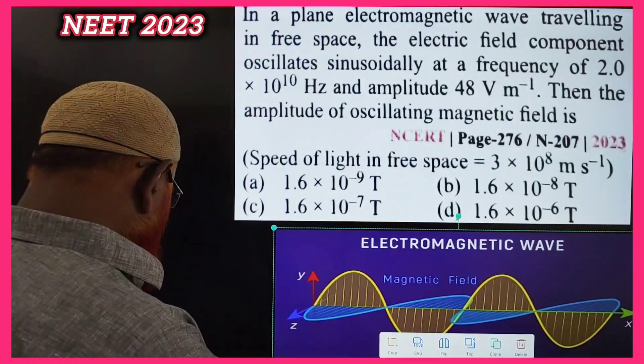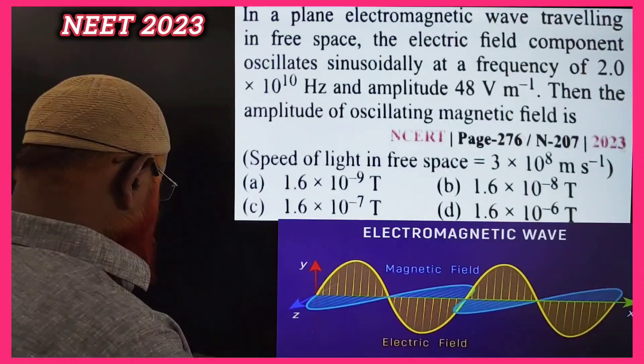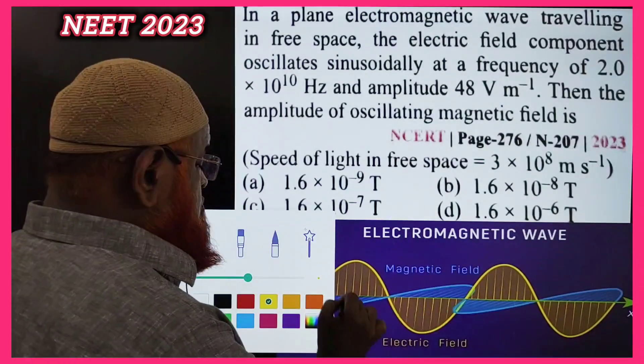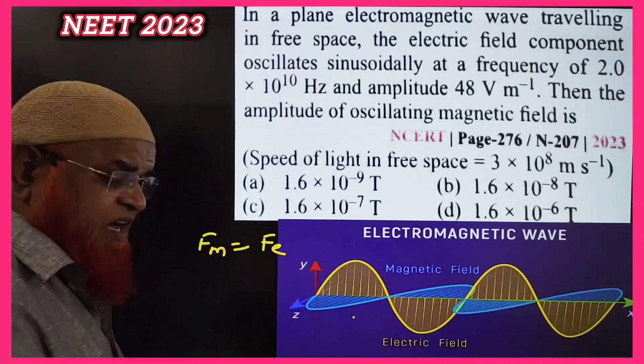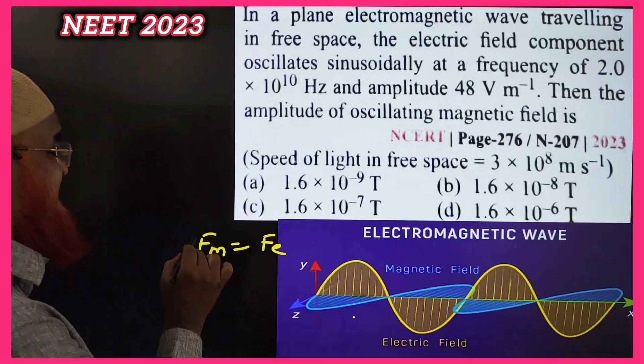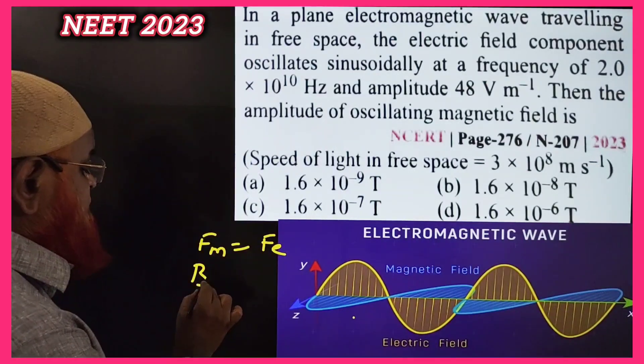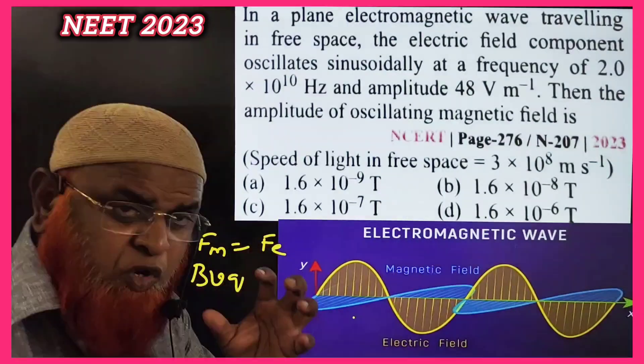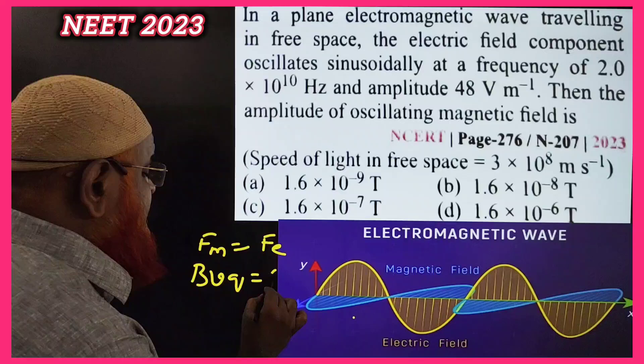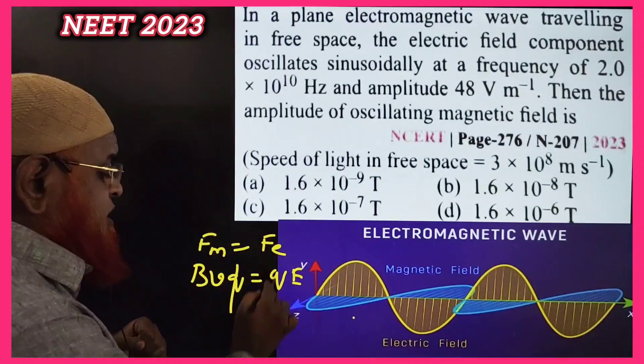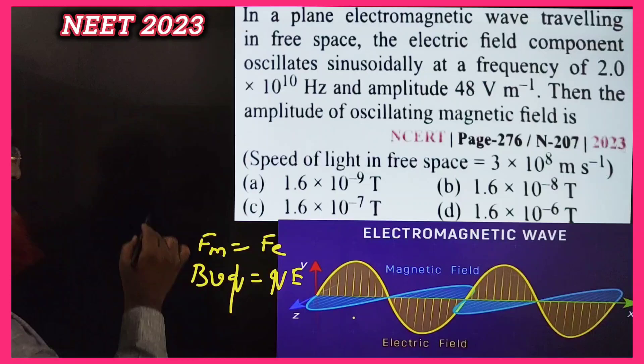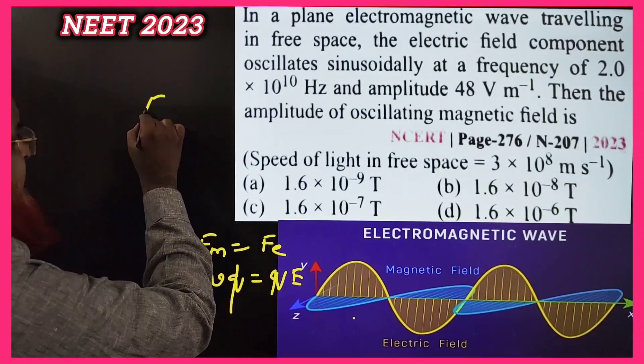You know force due to magnetic field is equal to force due to electric field. Force due to magnetic field is given by Bvq and force due to electric field formula you know already - it is q into E. Q gets cancelled, you will get E is equal to Bv.